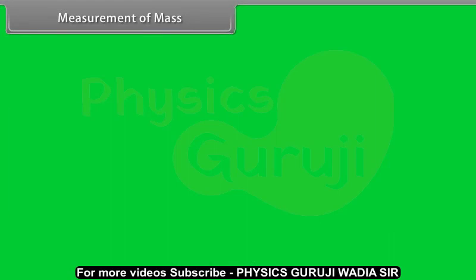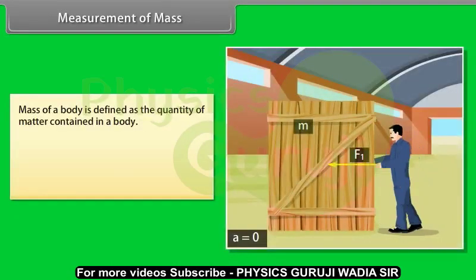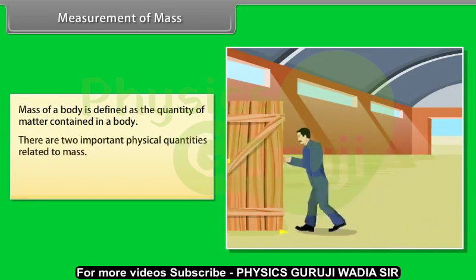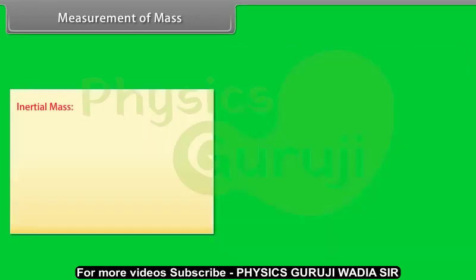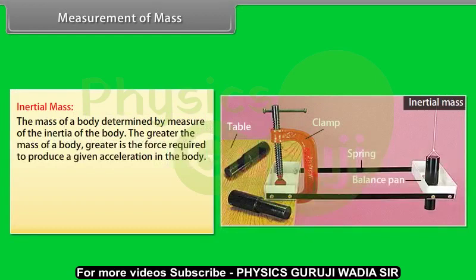Measurement of mass. Mass of a body is defined as the quantity of matter contained in a body. There are two important physical quantities related to mass of a body. These quantities are inertial mass and gravitational mass.